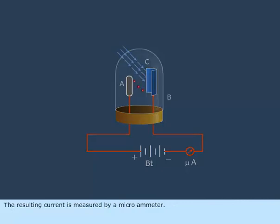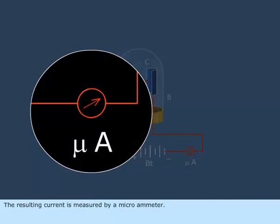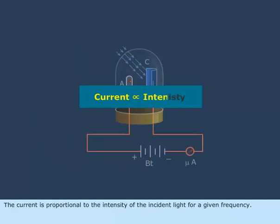The resulting current is measured by a microammeter. The current is proportional to the intensity of the incident light for a given frequency.